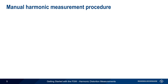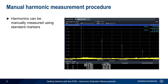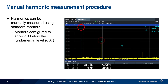The standard spectrum markers on the FSW can be used to measure the levels of the fundamental and the harmonics. In this case, markers are normally configured as delta markers to show the difference in level relative to the fundamental. In this example, the second harmonic is down about 37 dB from the fundamental, the third harmonic is about 53 dB down, etc.